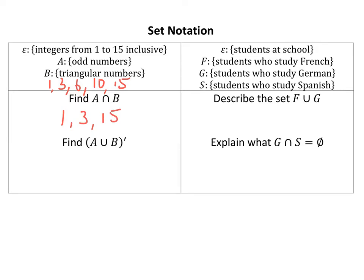Now for the second one, A union B, so anything that's odd, triangular, or both. But not that - this little dash means not. The official word is complement.